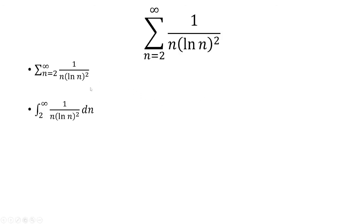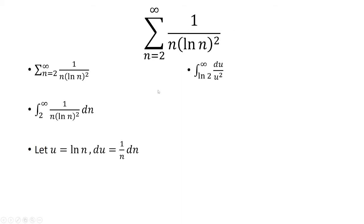So we're going to use the integral test here. The integral is going from 2 to infinity. And so we're going to use a u substitution, like u equal ln of n. du is 1 over n dn. So that's just du over u squared.